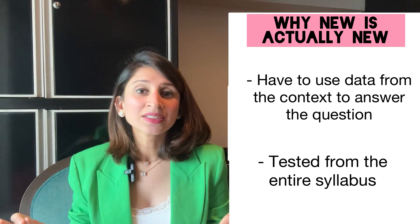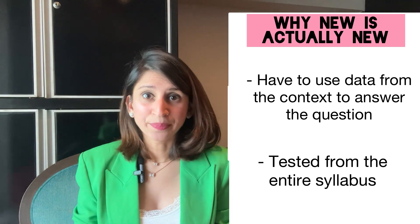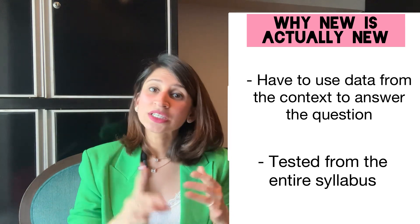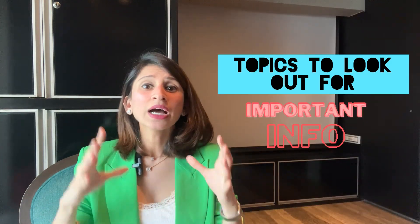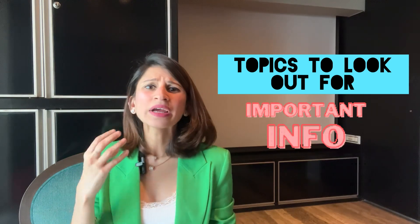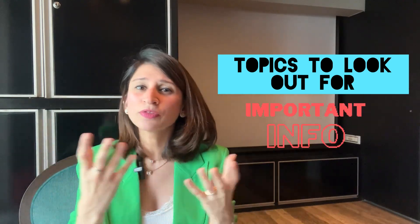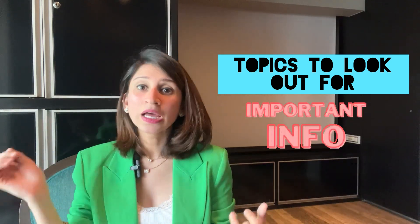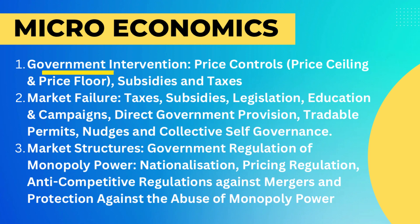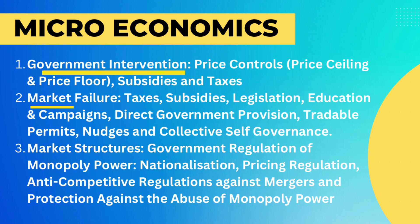This brings us to point three: the topics to look out for. Questions generally come from the following topics. First, government intervention — price controls, ceilings, floors, subsidies, and taxes. Second, market failure — taxes, subsidies, legislation, education and campaigns, direct government provision, tradable permits, nudges, and collective self-governance.